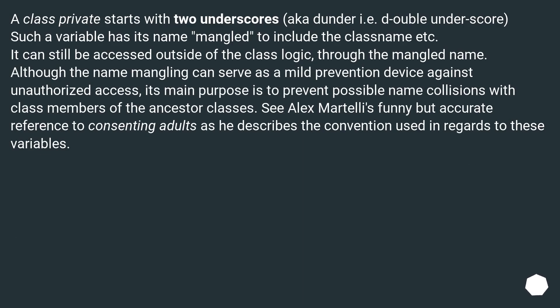A class private starts with two underscores, also known as dunder or double underscore. Such a variable has its name mangled to include the class name, etc. It can still be accessed outside of the class logic through the mangled name. Although name mangling can serve as a mild prevention device against unauthorized access, its main purpose is to prevent possible name collisions with class members of ancestor classes.